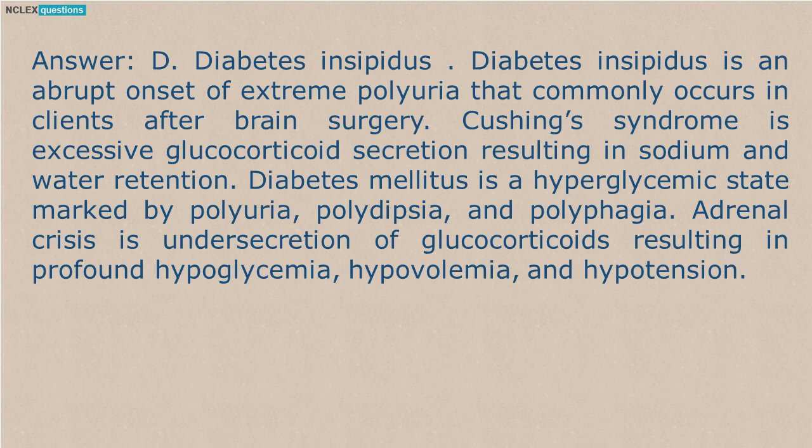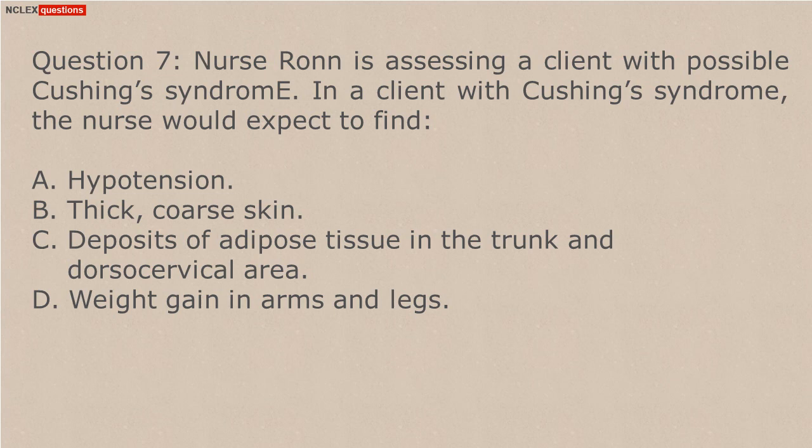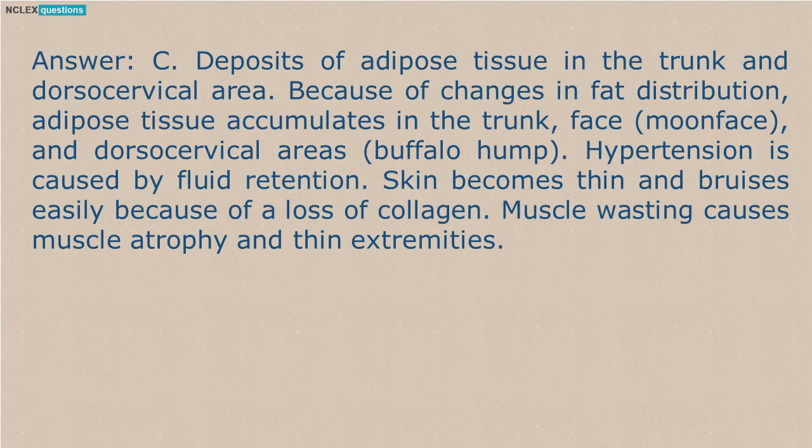In patients with Cushing's syndrome, the nurse would expect to find: A. Hypotension. B. Thick, coarse skin. C. Deposits of adipose tissue in the trunk and dorsal cervical area. D. Weight gain in arms and legs. Answer: C. Deposits of adipose tissue in the trunk and dorsal cervical area. Because of changes in fat distribution, adipose tissue accumulates in the trunk, face (moon face), and dorsal cervical area (buffalo hump). Hypertension is caused by fluid retention. Skin becomes thin and bruises easily because of a loss of collagen. Muscle wasting causes muscle atrophy and thin extremities.